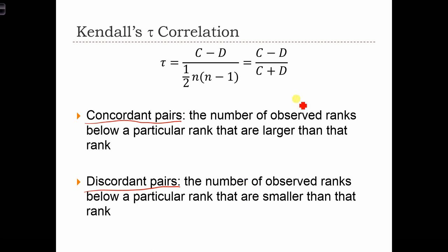And if we add up the two sets of pairs, C plus D, that's the same thing as half N times N minus 1. So it's easy to remember this formula in terms of just C's and D's. So we just have C minus D over C plus D. Now let's see what these C and D's actually mean.